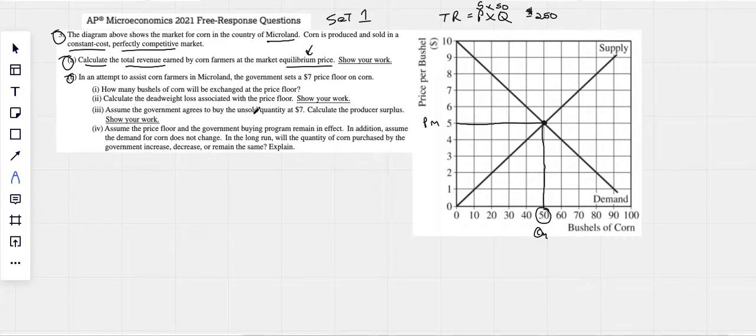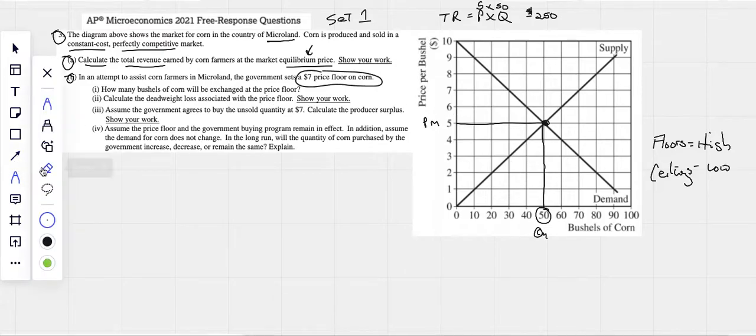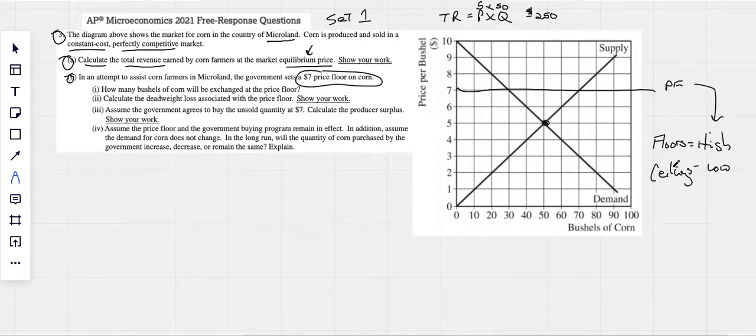All right, let's go to B. In the attempt to assist corn farmers, the government sets a $7 price floor on corn. Let's make sure we talk about price floors and price ceilings. Again, price floors, we have a little mantra we say: floors are high and ceilings are low. Meaning that a price floor must be above the equilibrium price, and a price ceiling has to be below the equilibrium price. To be effective, price floors have to be higher than the equilibrium, and price ceilings would have to be lower than the equilibrium. What we can see about this is that at a $7 price floor, it is definitely higher than the equilibrium price of $5. So this is what we call an effective price floor. It will actually change what happens in the market.